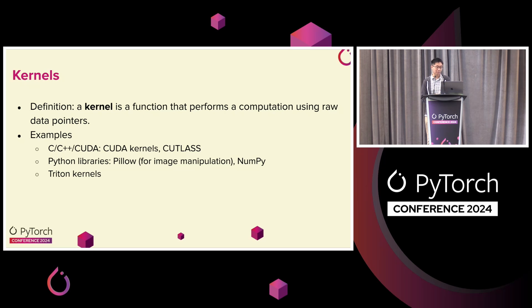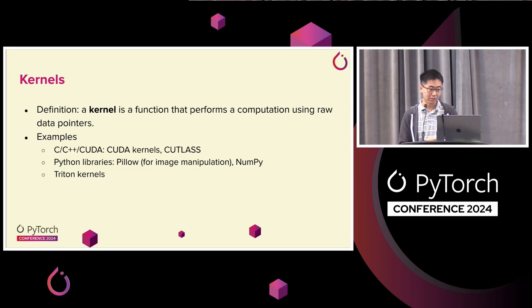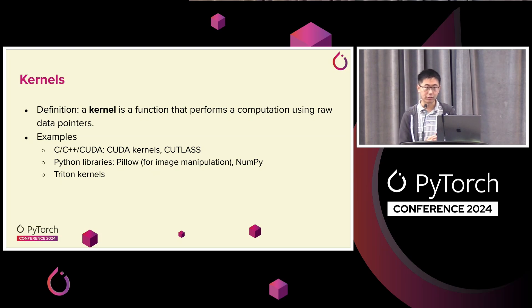Another example is the Python Pillow library. The third type of kernels we'll talk about today are Triton kernels. Triton is a Python DSL where you can write a Triton kernel and it compiles down to a CUDA kernel.